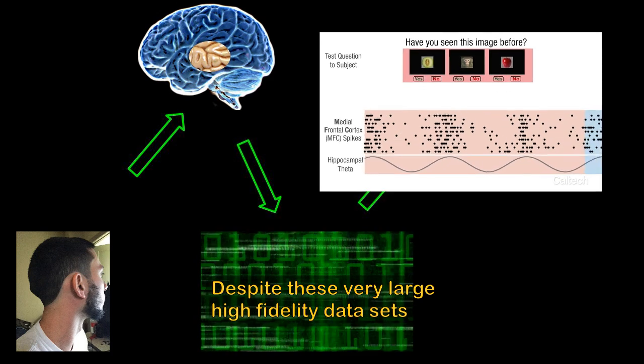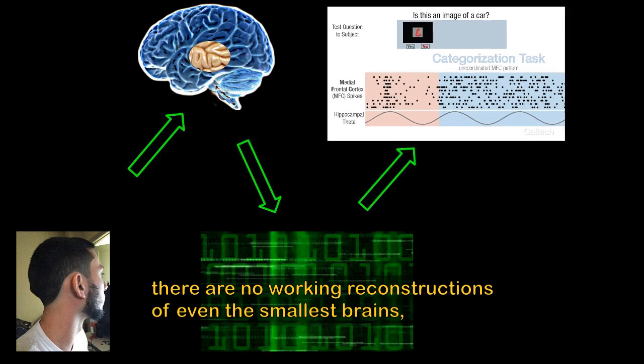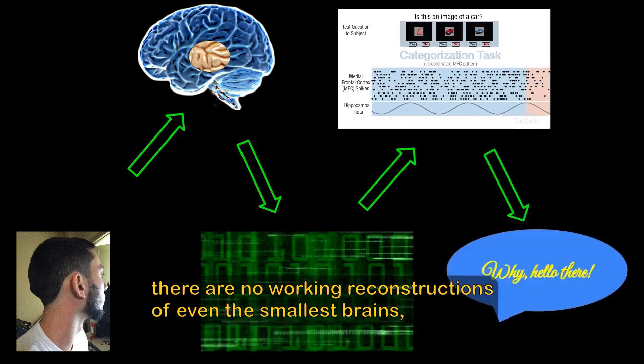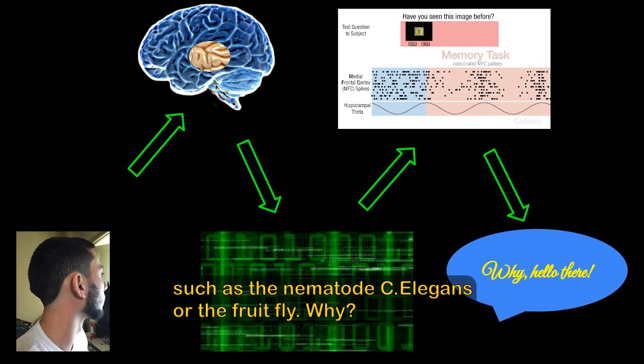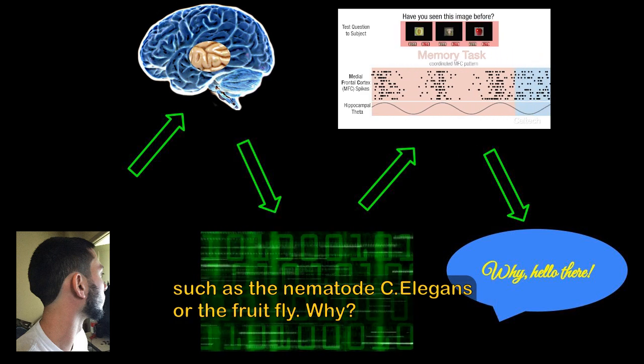Despite these very large high-fidelity data sets, there are no working reconstructions of even the smallest brains, such as the nematode C. elegans or the fruit fly. Why?